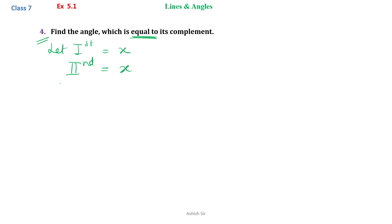Now, they are complementary to each other. That means x plus x will be equal to 90 degrees because they are complementary angles. So, 2x is equal to 90 degrees.